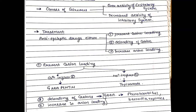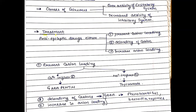Now, to understand the treatment of epilepsy, we have to understand the cause. Seizures are abnormal electrical activity of the brain — meaning overactivity. There are two reasons: firstly, if there is overactivity of the excitatory system, or secondly, if there is decreased activity of the inhibitory system. In both cases, seizures can result.